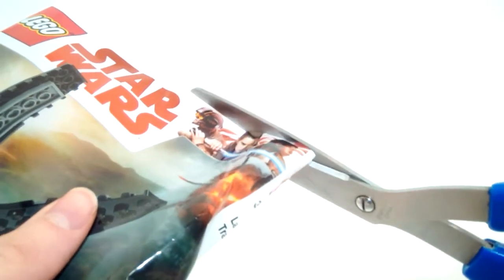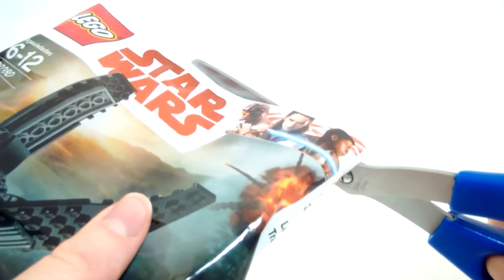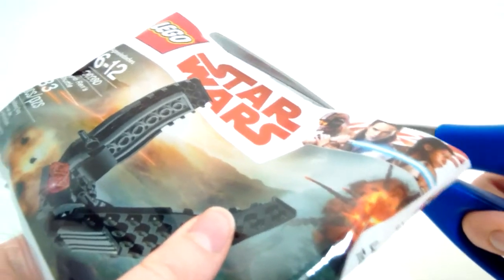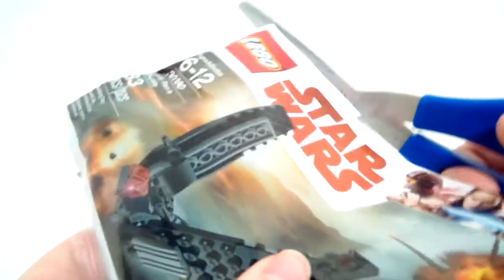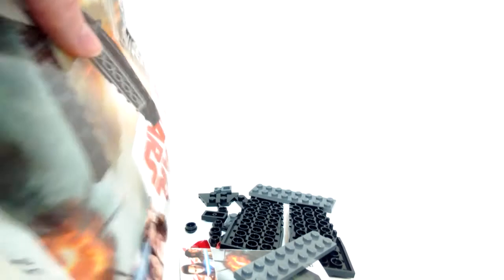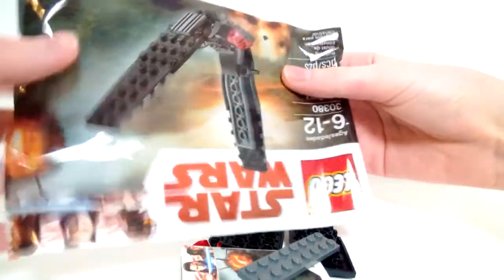So I will be doing a speed build of this thing, but first I guess I have to get it open, so let's go ahead and do that. Cut right here. Hopefully I cut it up. Okay, stuff is already spilling out. Let's see what we got in here. Okay, so that's that. Polybag is now empty.